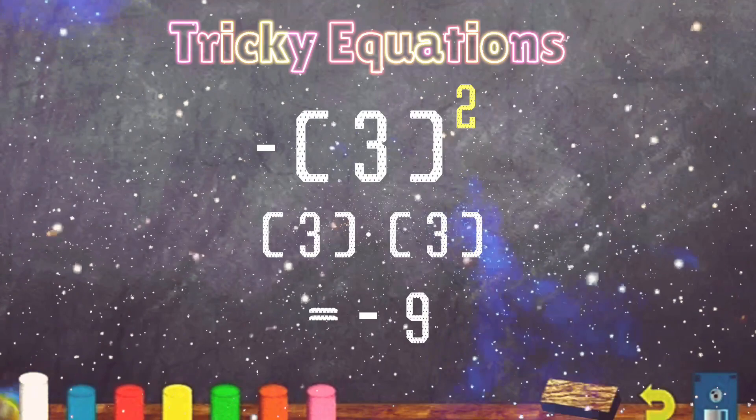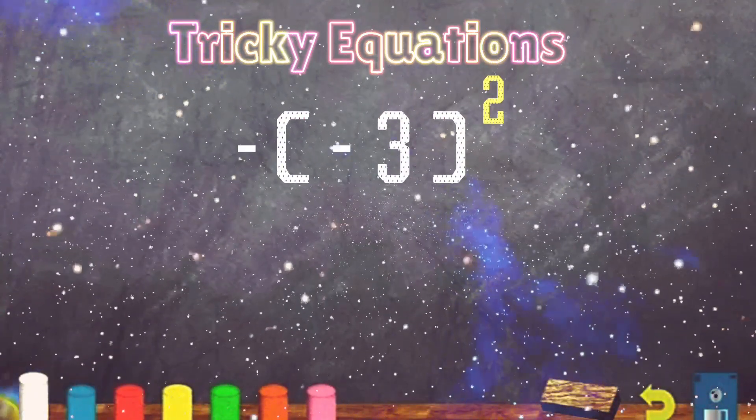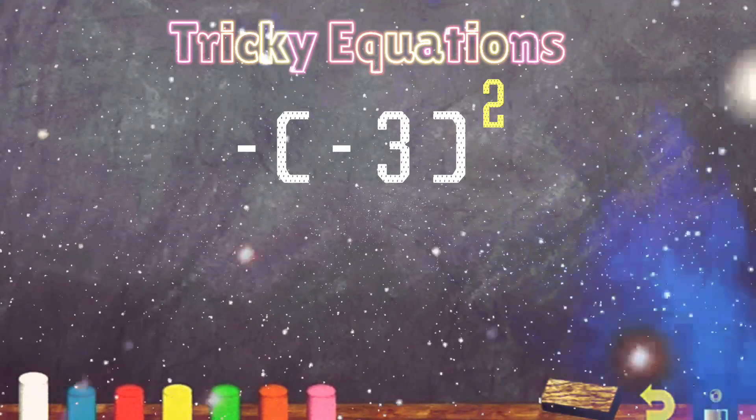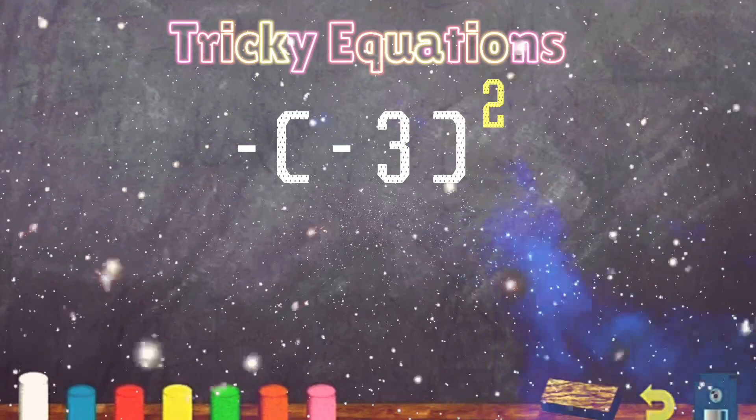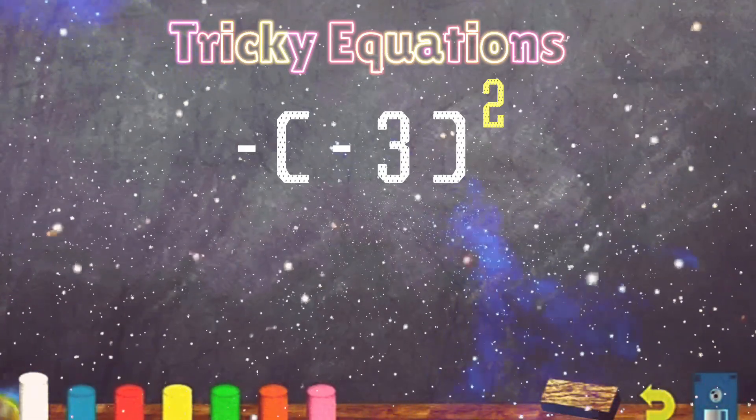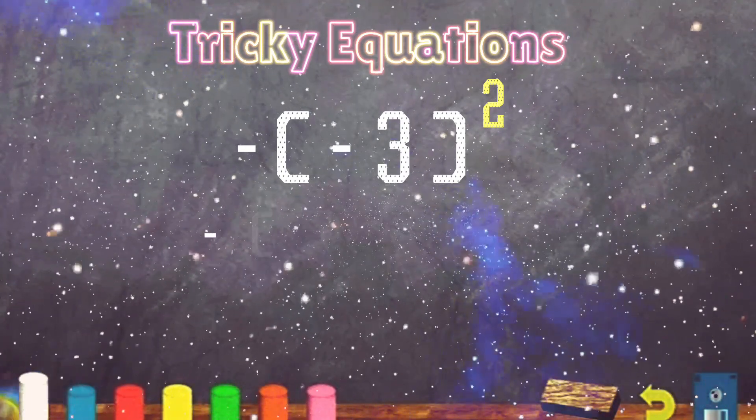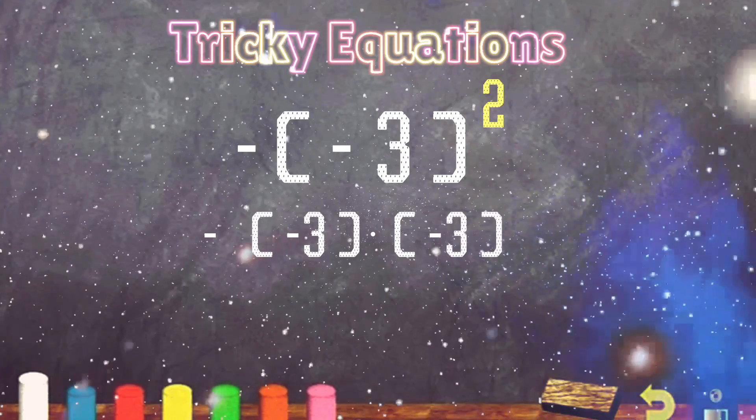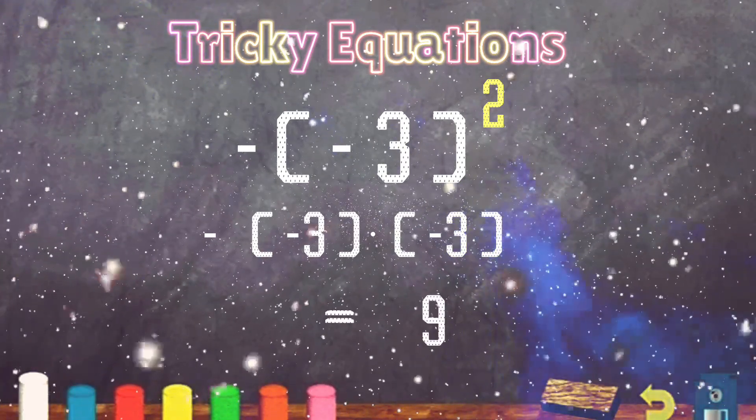Now let's try one more. How about if we have negative outside the parentheses and a negative 3 sitting inside the parentheses and the exponent 2 on the outside. First we will deal with what's in the parentheses. So we will square the negative 3 which means negative 3 times negative 3 and that equals positive 9. Since a negative times a negative equals a positive.